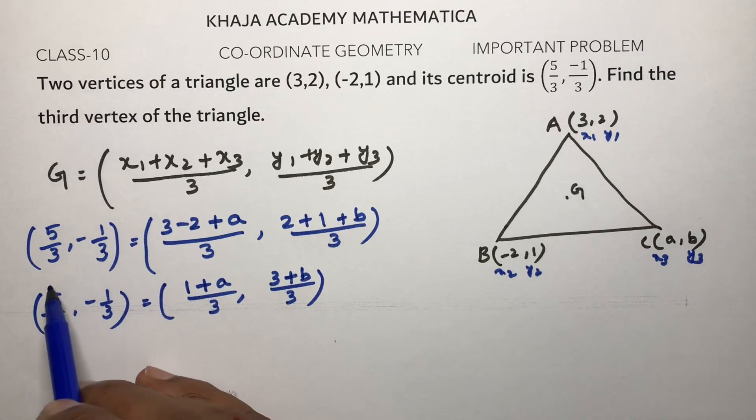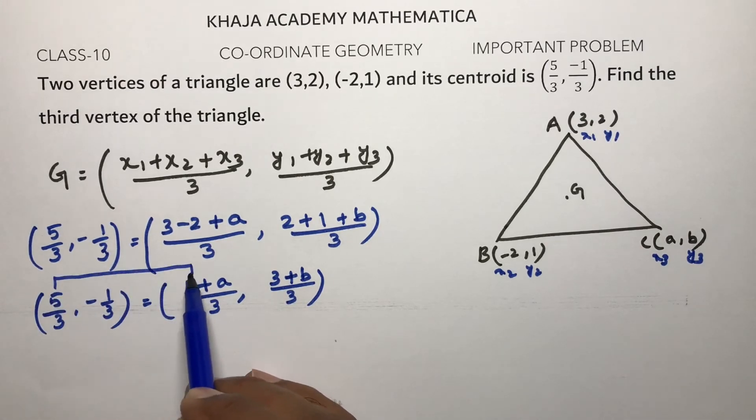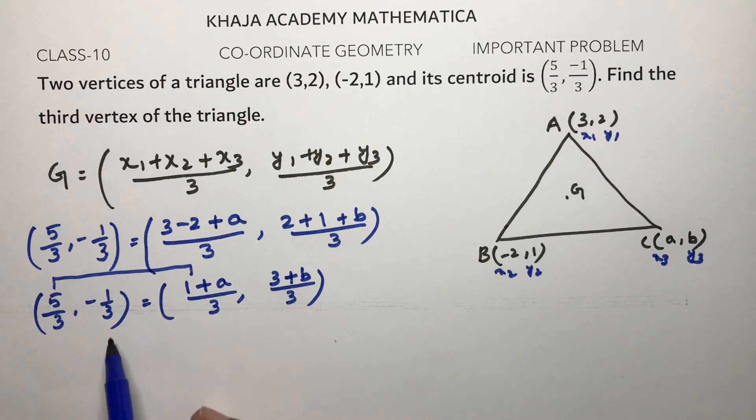Now I will equate abscissa, that is x coordinate value with x coordinate, and y coordinate value with y coordinate, or ordinate with ordinate. So here 5/3 equals (1 + a)/3.